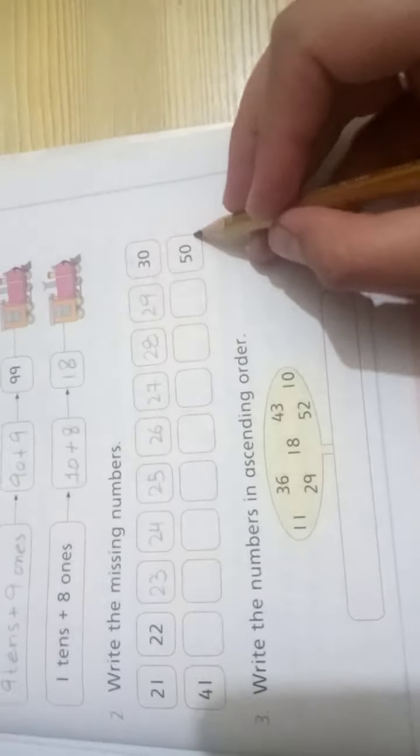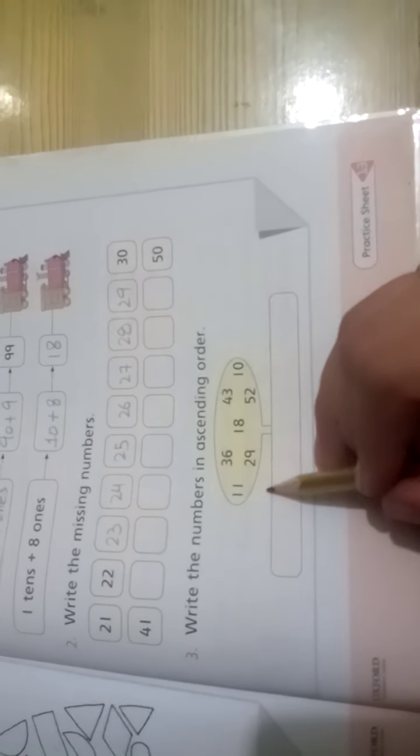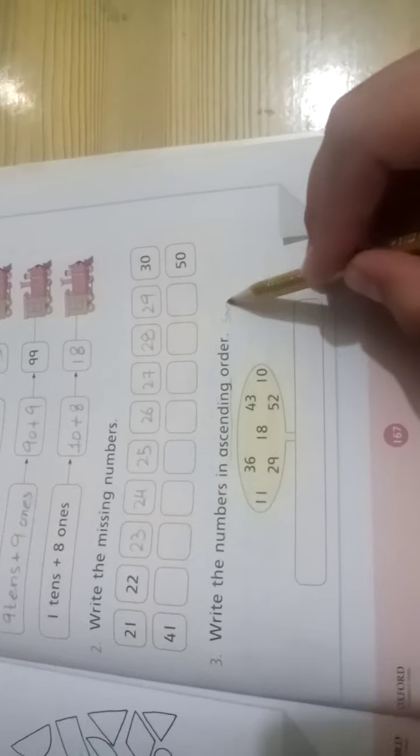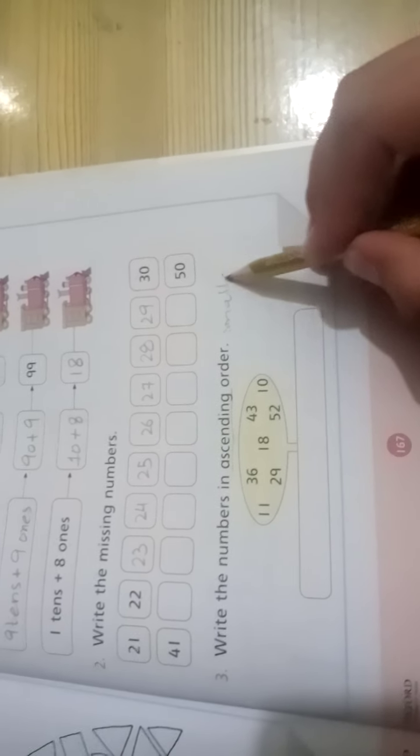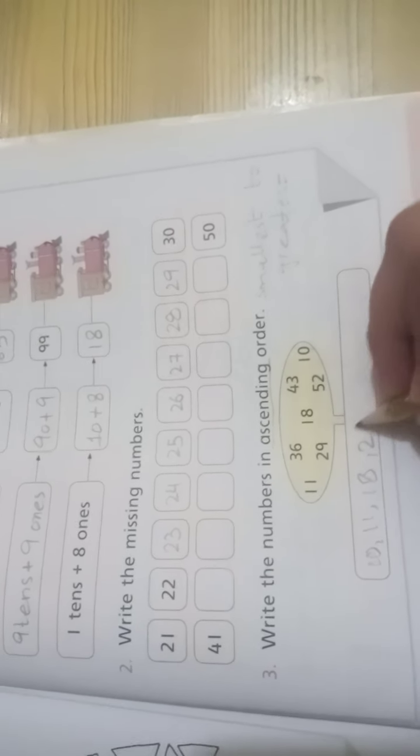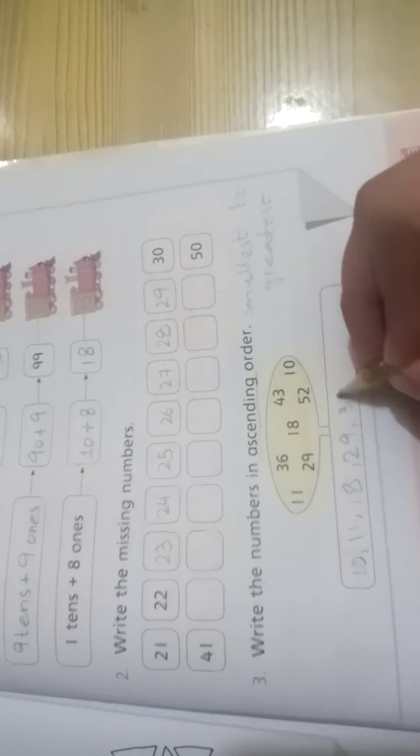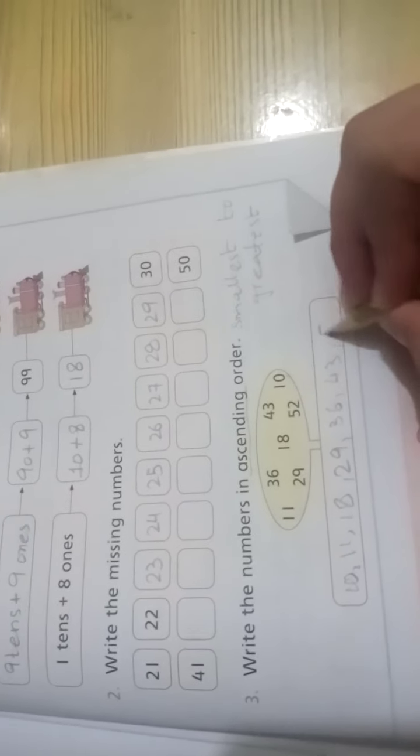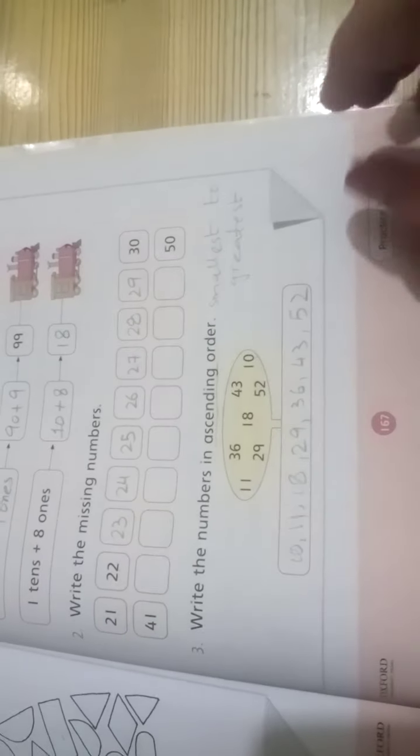Same procedure. Now question 3: write the numbers in ascending order, small to greatest. Ascending means smallest to largest. The smallest number here is 10, so write 10 first, then 11, then 18, then 29, then 36, 43, and 52. You can check the sequence of all numbers in detail. This is how you do ascending order.